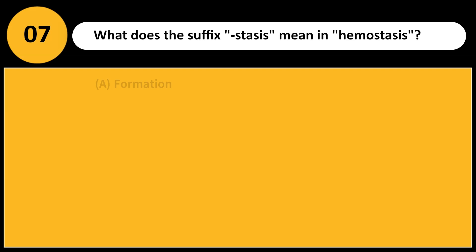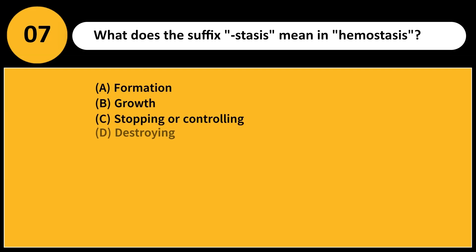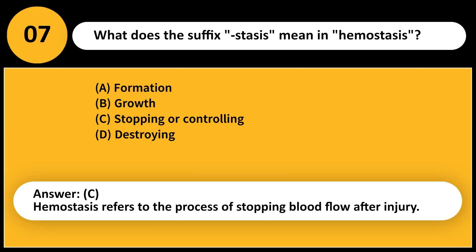What does the suffix -stasis mean in hemostasis? A. Formation B. Growth C. Stopping or controlling D. Destroying. Answer: C. Hemostasis refers to the process of stopping blood flow after injury.